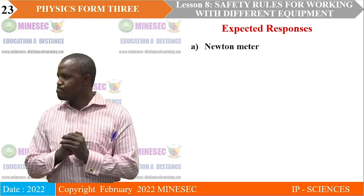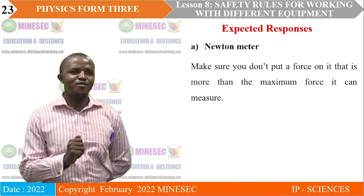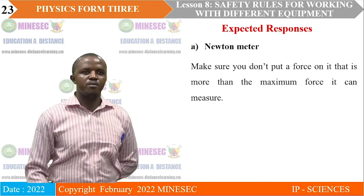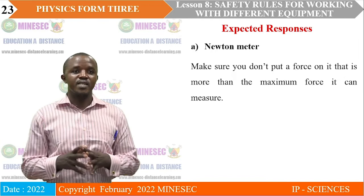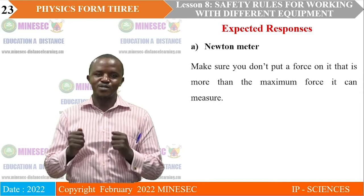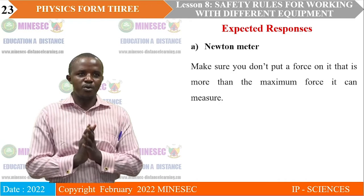Which safety measures apply when working with a Newton meter? Make sure you don't put a force on it that is more than the maximum force it can measure. Newton meters are actually composed of springs, and there is a rule that says beyond the elastic limit of mass or weight applied to these springs, they can be damaged and will cease to function normally. Most often when equipment is manufactured, they indicate the upper limit — the maximum weight it can support.